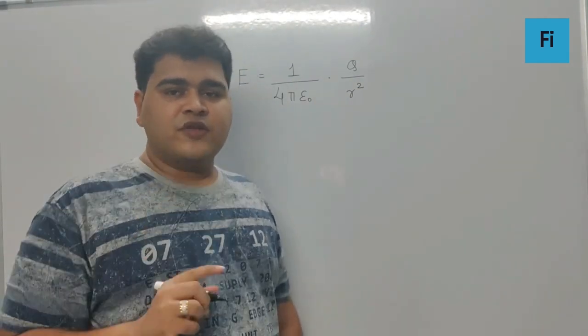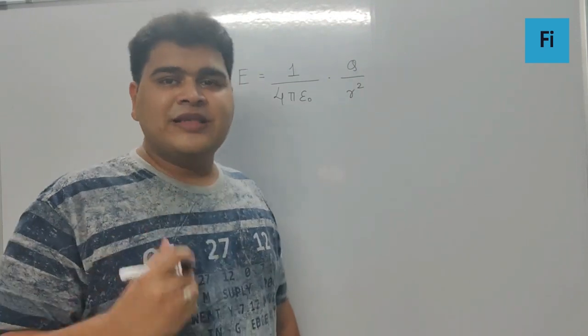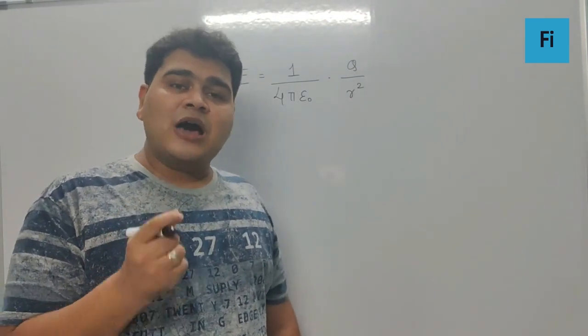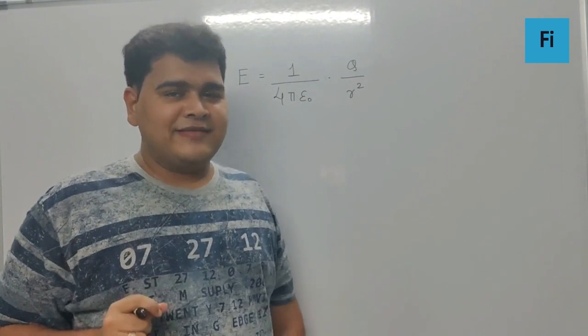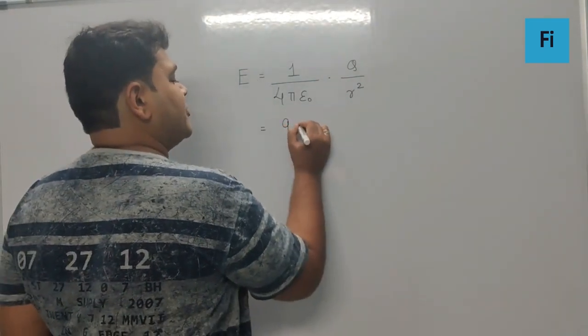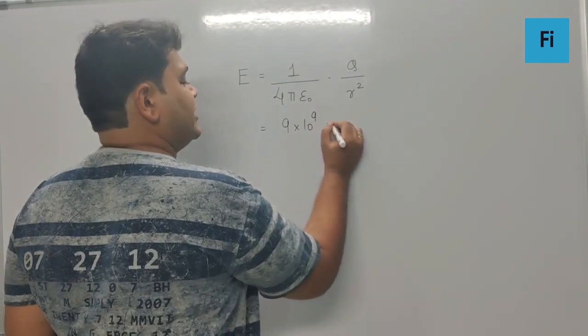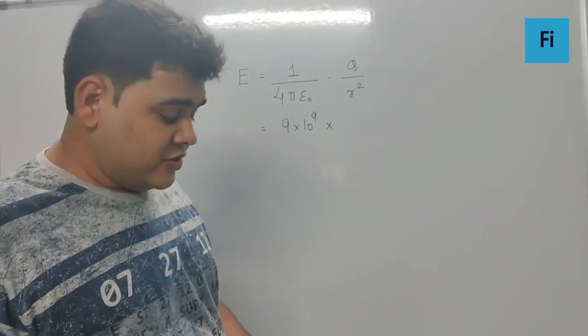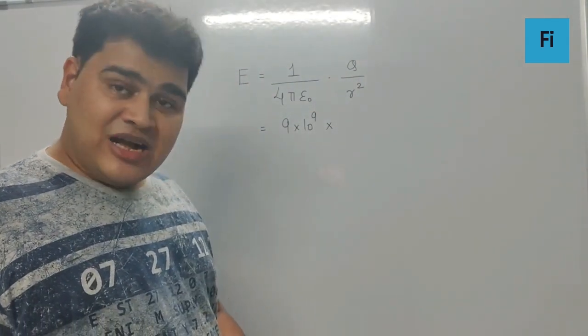Which means r over here is not 10 centimeter, it is 15 centimeter. So in this scenario we can write 1 upon 4 pi epsilon naught is 9 into 10 raised to 9 as the standard value, and the value of charge which they have given is 3.2 into 10 raised to minus 7 Coulomb.